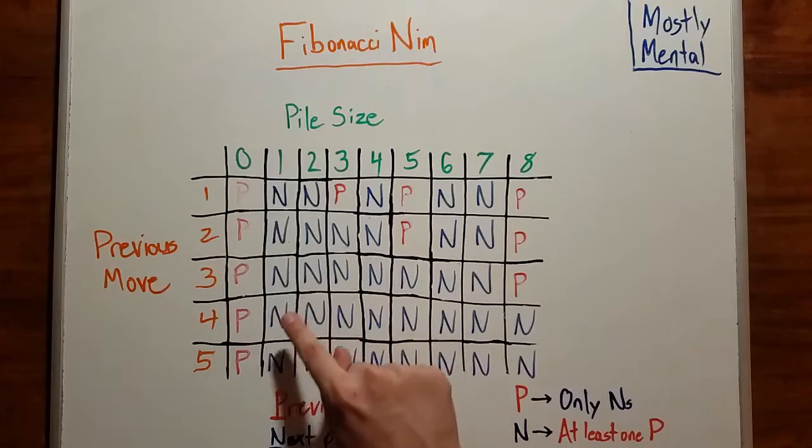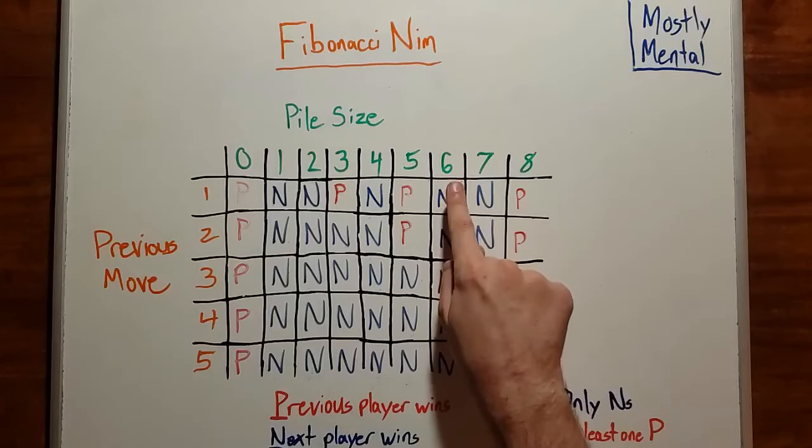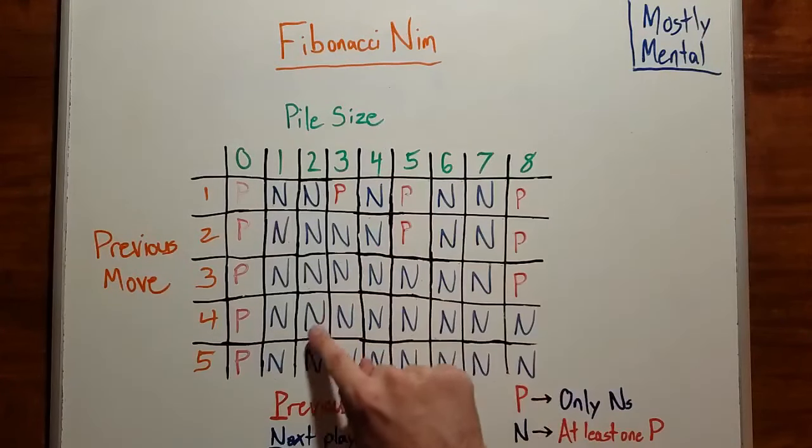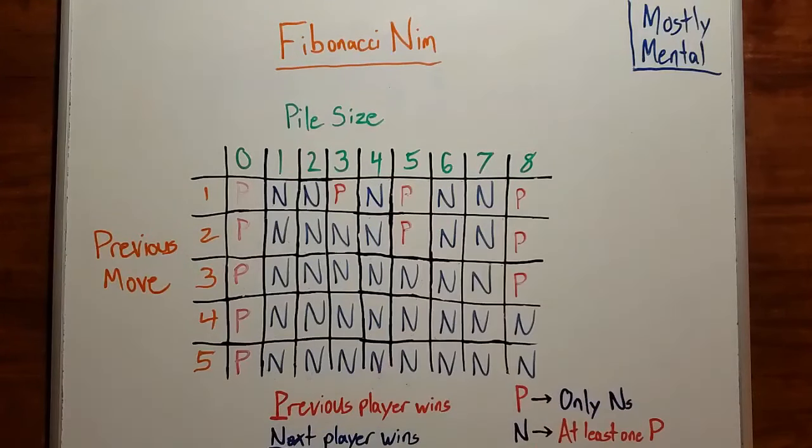Since all of these are N positions, that means that the starting position with 5 ducks must be a P position. In other words, the second player can always win. If instead we started with a pile of size 6, that would correspond to this diagonal. And there's a P position in there, so the starting position with 6 ducks is an N position, and the first player wins.